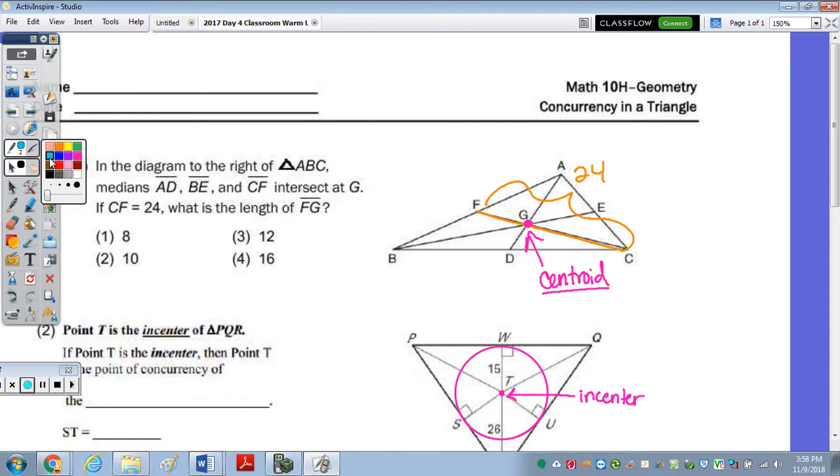It then gave you the length of CF is 24. Remember, the relationship between FG to GC is a 1 to 2 ratio, or you can think about dividing it up into thirds.